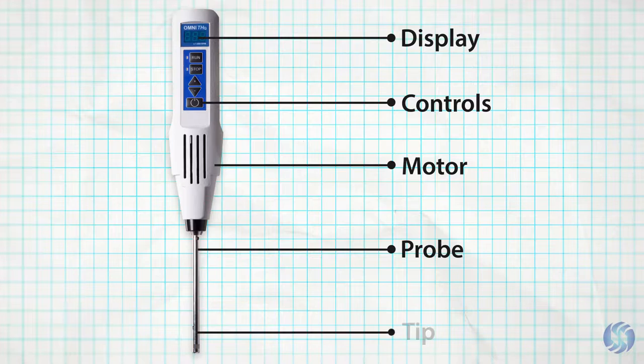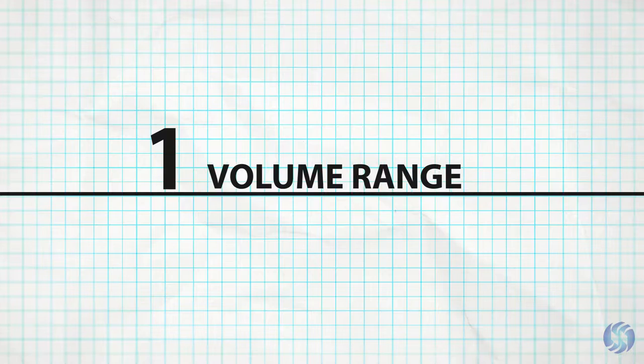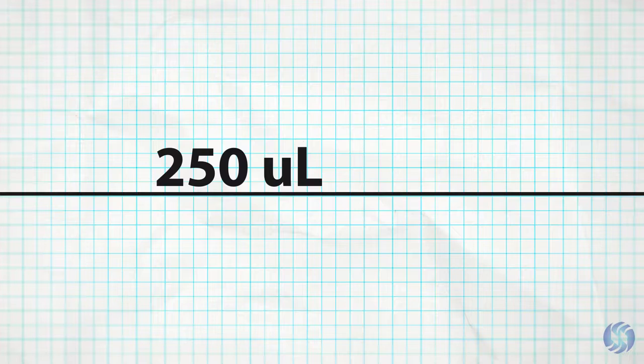First, what volume range will you be working in? Omni offers several rotor stator homogenizer options capable of processing volumes ranging from 250 microliters to 5 liters. Once the volume range is identified,